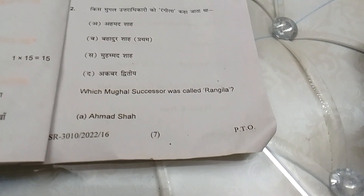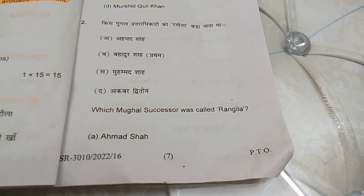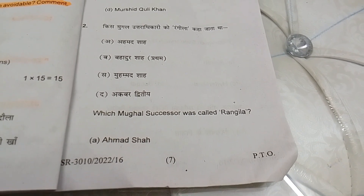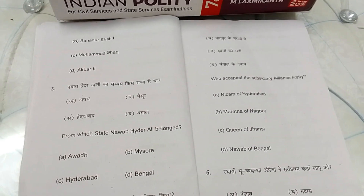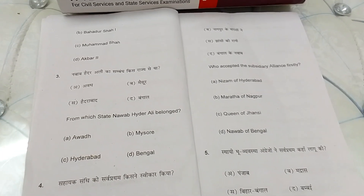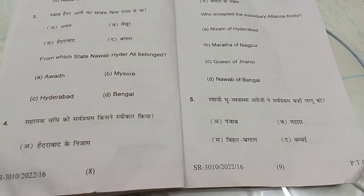MCQ 2: Which Mughal successor was called Rangila? A. Ahmed Shah, B. Bahadur Shah I, C. Muhammad Shah, D. Akbar II. MCQ 3: From which state did Nawab Haider Ali belong?